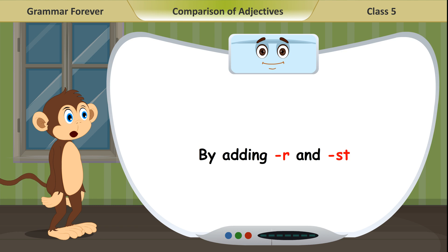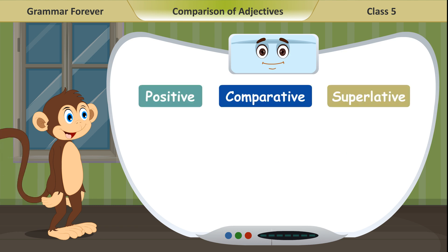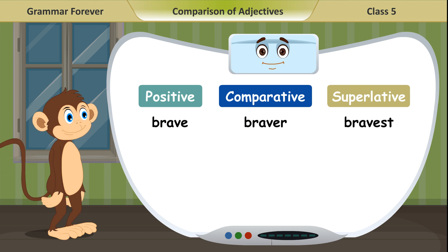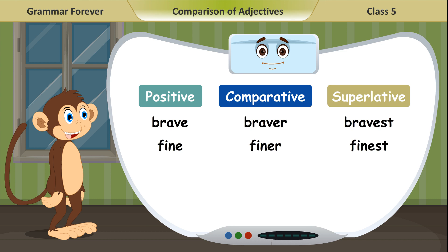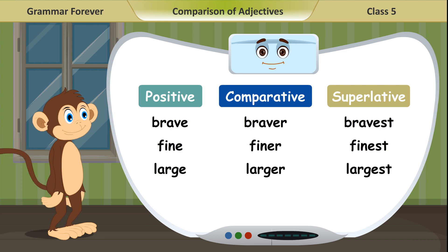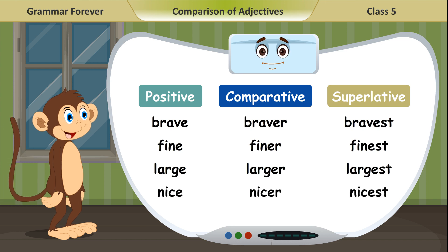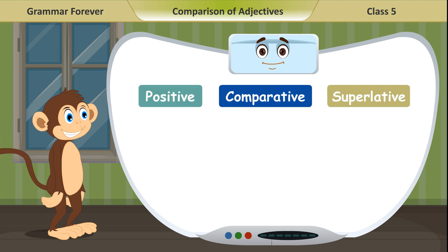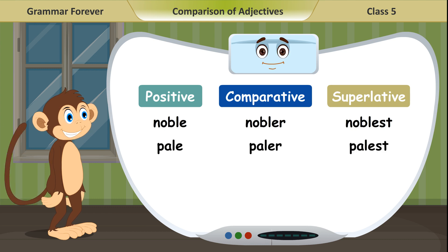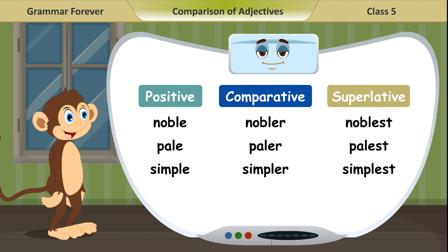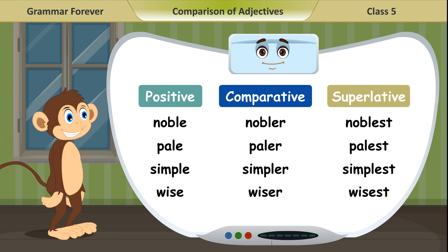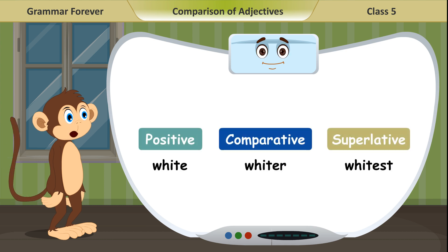By adding -ER and -EST to words ending in -E (drop the final E): Brave, braver, bravest. Fine, finer, finest. Large, larger, largest. Nice, nicer, nicest. Noble, nobler, noblest. Pale, paler, palest. Simple, simpler, simplest. Wise, wiser, wisest. White, whiter, whitest.